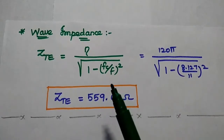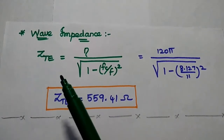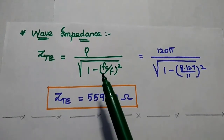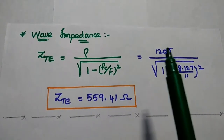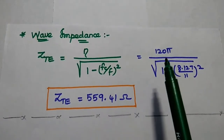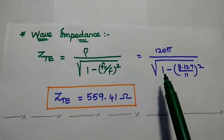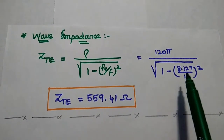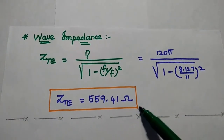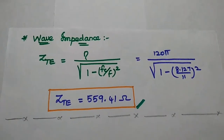Finally, the wave impedance for this TE wave: Z_TE = eta / sqrt(1 − (f_c/f)²) = 120·pi / sqrt(1 − (8.127/11)²) = 559.414 ohms.